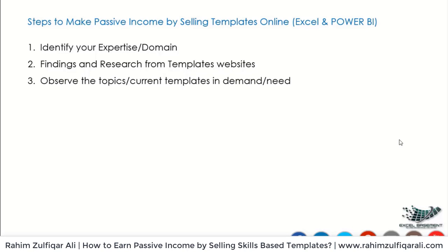Number three is to observe the topics or the current templates in demand. You need to observe every 15 days what is the current topic or problem — globally or domestically — that users are trying to find templates for. Sometimes we are good at something, but that is not actually in demand from the user side. So we have to identify the user issues or problems from the client side, and then start developing those templates.